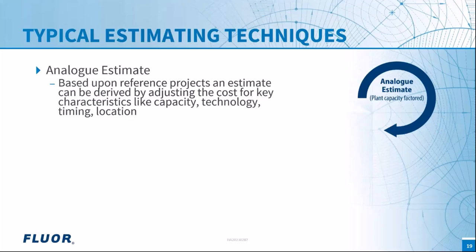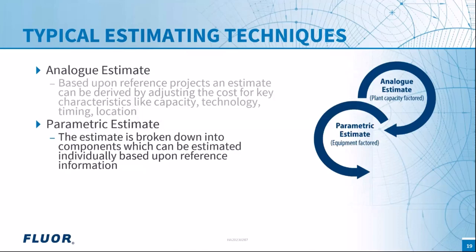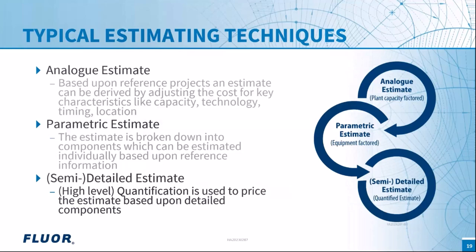The second technique is the parametric estimate, preferred when more definition becomes available. We break down the scope into smaller components estimated individually. A well-known approach is the equipment-factored estimate: we determine a cost for each piece of equipment — a pump, distillation column, vessel, compressor — and multiply by a factor covering foundation, piping, controls, and associated scope. This builds up the estimate with more accuracy, though it requires more time than the analog method.